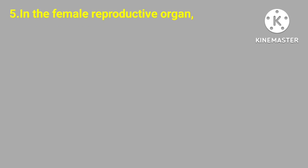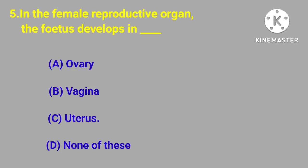Question number five. In the female reproductive organ, the fetus develops in: ovary, vagina, uterus, none of this. Correct answer is uterus.